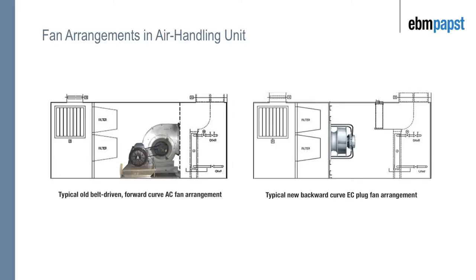Here's an example of a plug fan and how it's arranged, typically without housing. Here are some images showing the use of backward curved plug fans without housing and forward curved fans in an air handling unit. The layout of the fans is fundamentally different: the backward curve plug fan is positively pressurizing a plenum, whereas the forward curve fan is blowing air in the direction of a duct. The air intake on the two fans is also completely different.